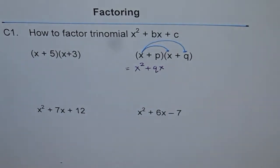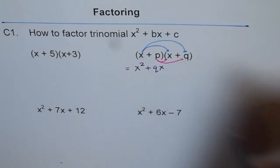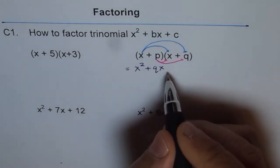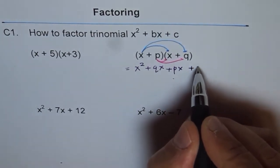Now, let's multiply by p. p times x and p times q. So what do we get? We get px plus pq.